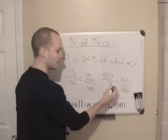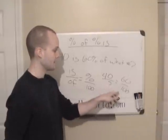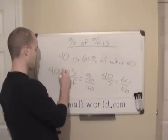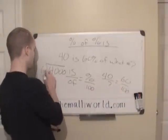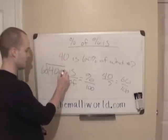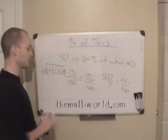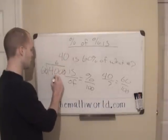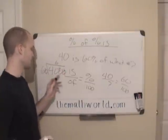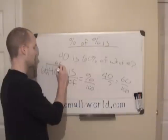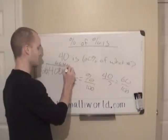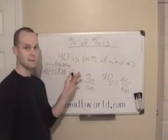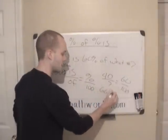And what we do from here is we multiply 40 times 100 and then divide by 60. So we're going to get 4,000 divided by 60. And I'll go ahead and divide this out for everyone. I can just take off one of the zeros. And then 6 goes into 40, it goes in there 6 times with a remainder of 4. And 6 goes into 40 again 6 times, and it's going to repeat. So 40 is 60% of 66.666 or 66 and 2 thirds.